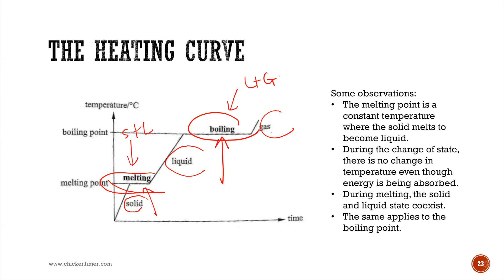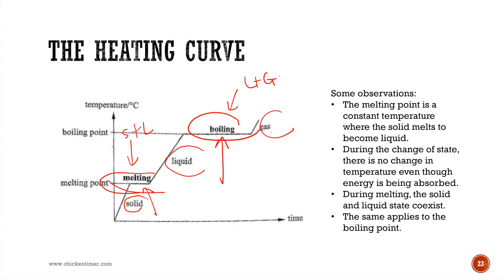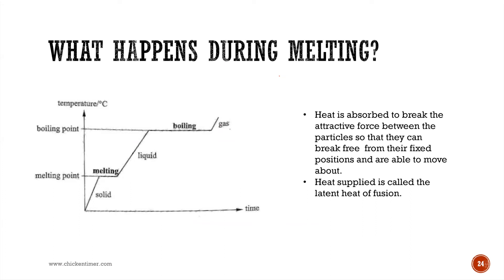During phase changes, there is no change in temperature — it remains constant — because all the heat absorbed by the substance goes into overcoming the bonds between particles, increasing the potential energy. The heat supplied during melting has a special name: it is called the latent heat of fusion.